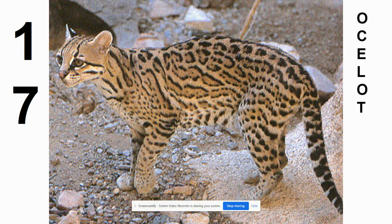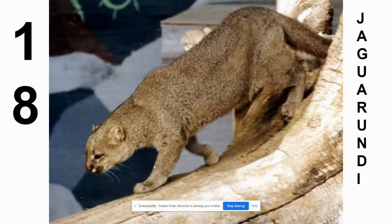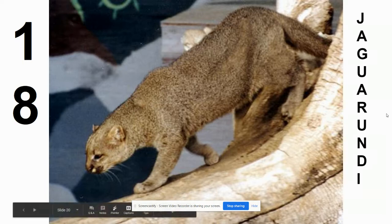Number seventeen is the ocelot — if you play Minecraft, you may have come across it in the game. It's another wild cat of the southern states, an interesting-looking cat with spots that looks very house-cat-like; people have even kept them as pets. Number eighteen is the jaguarundi, another smaller cat of the southern states. Deceiving because of its lack of spots, it looks like a really small mountain lion. The correct name is jaguarundi — take jaguar, add -undi at the end.